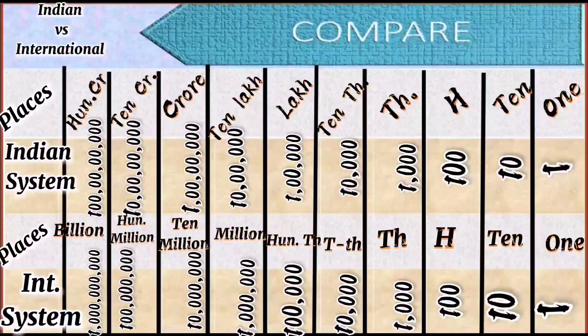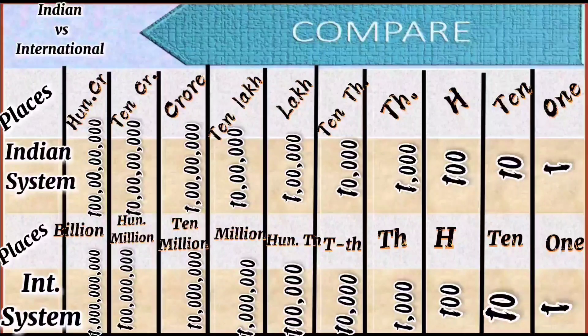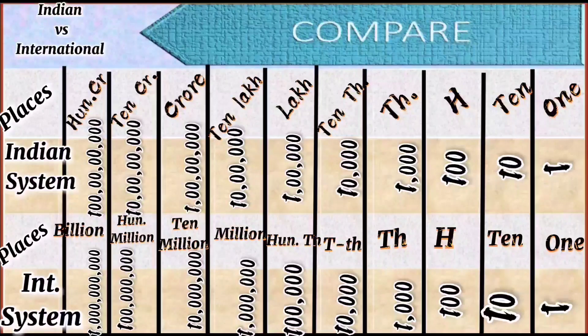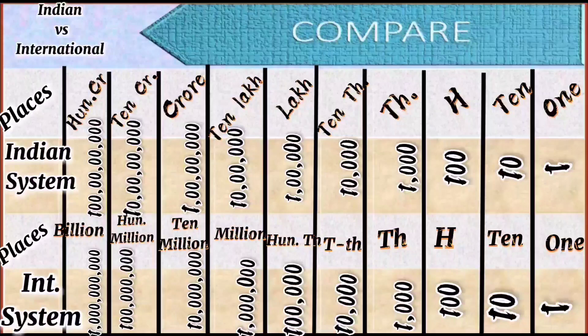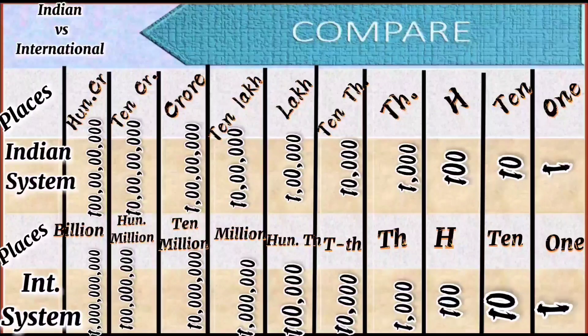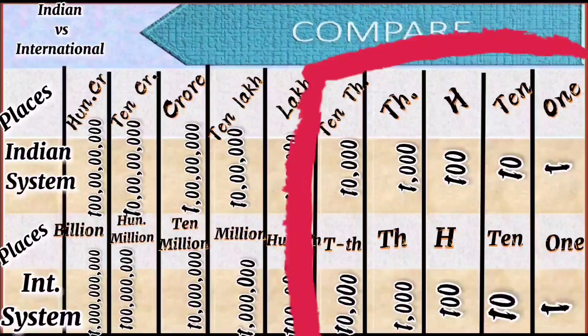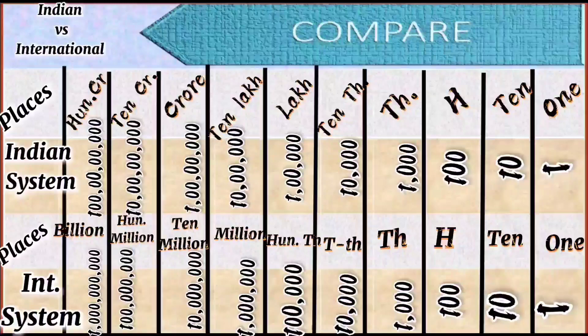You can see the place value chart of Indian and international system of numeration on the board. In Indian system of numeration, commas are used to mark ones, thousands, lakhs and the crores period, whereas in international system, commas are used to mark ones, thousands, millions, billions, etc. It's clear from the chart that up to five digits we read the same way in both the systems of numeration.